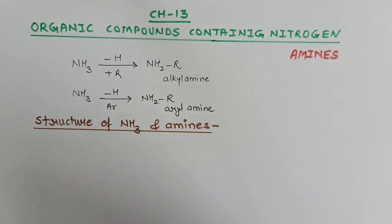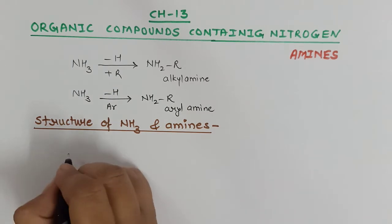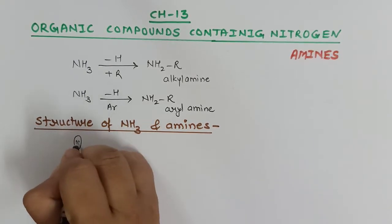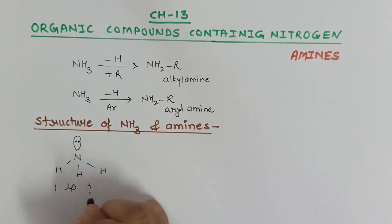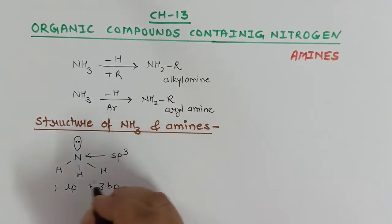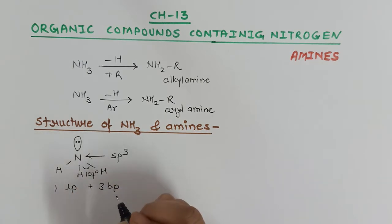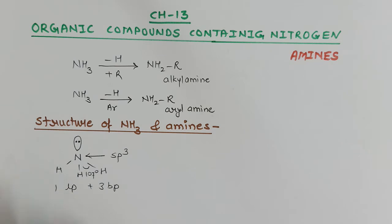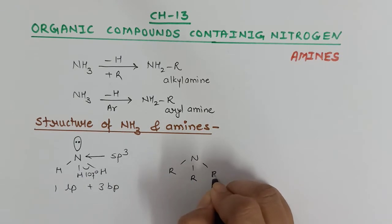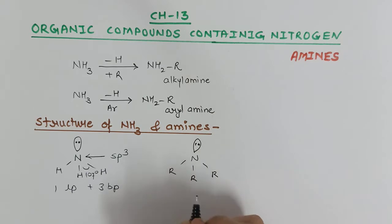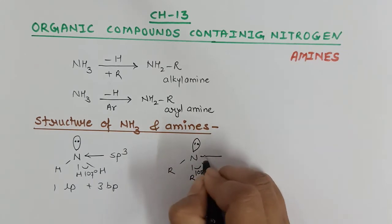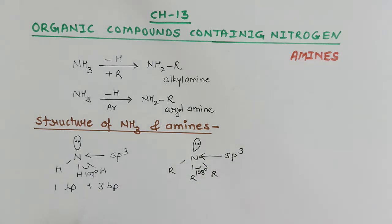Let us discuss the structure of ammonia. Ammonia has one lone pair and three bond pairs, and nitrogen is sp3 hybridized with a bond angle of 107 degrees. In amines, one of the hydrogens is replaced by an alkyl group. The bond angle increases to 108 degrees, but there is no impact on the hybridization state of nitrogen — it remains sp3 hybridized.